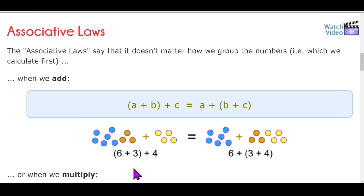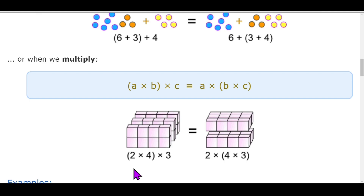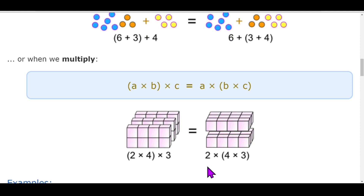This law is applicable for multiplication also. Here a and b get multiplied first, and then the product gets multiplied by c — this equals b and c grouped and multiplied, then that product multiplied by a. For example, two into four is eight, eight into three is twenty-four. Here four and three get multiplied first: four times three is twelve, and twelve into two is also twenty-four.